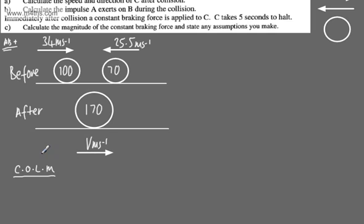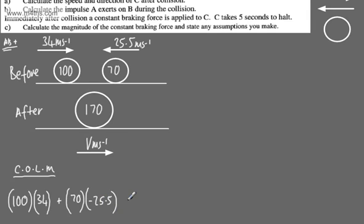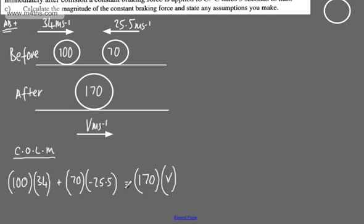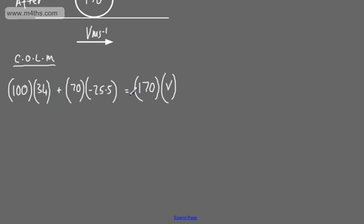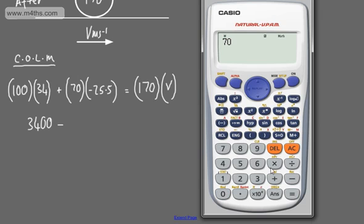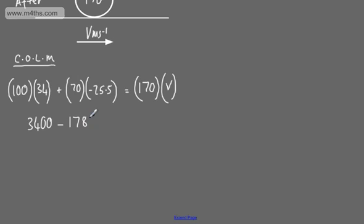Momentum is just mass times velocity. Before the collision, we've got a mass of 100 multiplied by a velocity of 34 m/s, plus a mass of 70 multiplied by a velocity. We need to be careful here — this is going to be a negative value, so minus 25.5 m/s. That must equal the mass of 170 multiplied by the velocity V. So we've got 3400 minus 1785, and then we divide by 170 to find V.